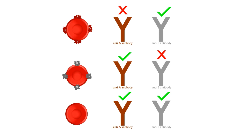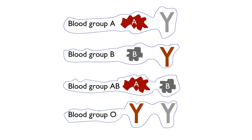A person with blood group A has agglutinogen A and NTB antibody in the blood. A person with blood group B has agglutinogen B and NTA antibody in the blood. A person with blood group AB has agglutinogen A and B but no NTA or NTB antibodies present in his blood. A person with blood group O has both the NTA and NTB antibodies in his blood.